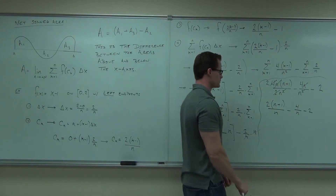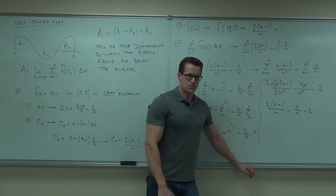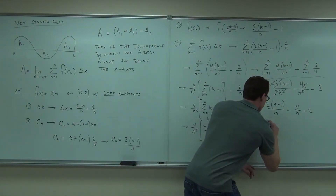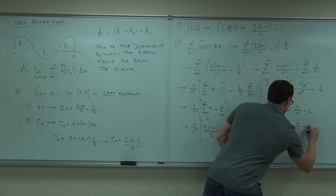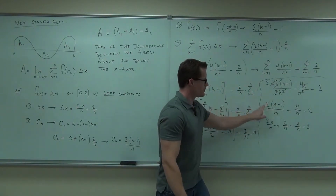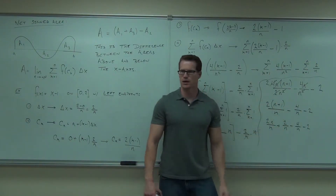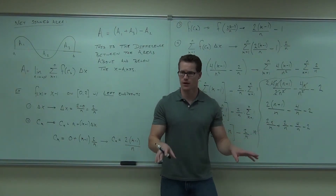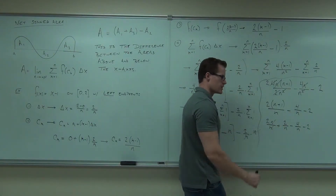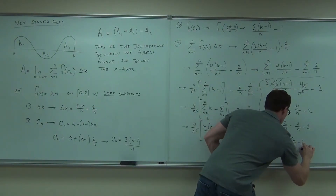We're almost done. Now we'll distribute the 2 — we'll get 2N plus 2. And I'm also going to break it up: split the fraction into 2N over N plus 2 over N. Just some basic algebra, but I want to make sure you're really solid on this before we go any further.